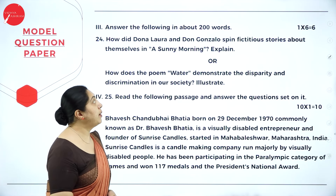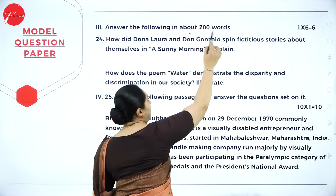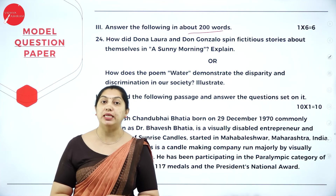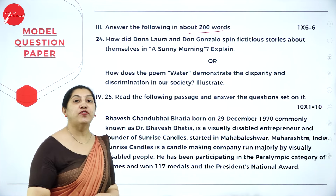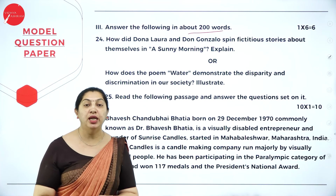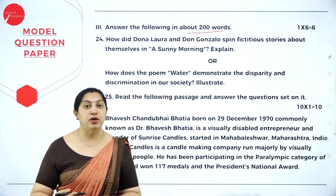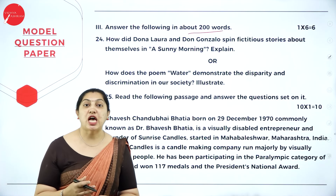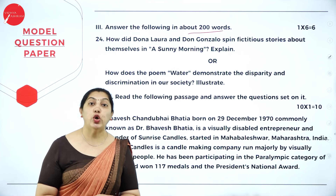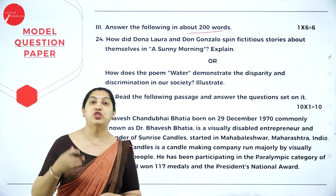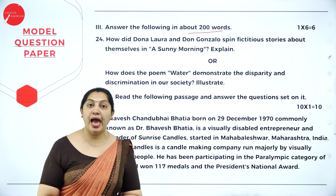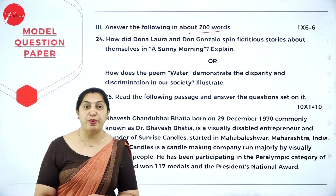Third main: answer the following in about 200 words, which is a six-marks question. You have two questions and must answer any one. When writing a six-mark answer, first write a note about the author, then an introduction, then the main answer, then the conclusion, and finally the critical analysis. For four-mark answers, write a note about the author and then the answer. This is how the presentation should be written in your answer script.